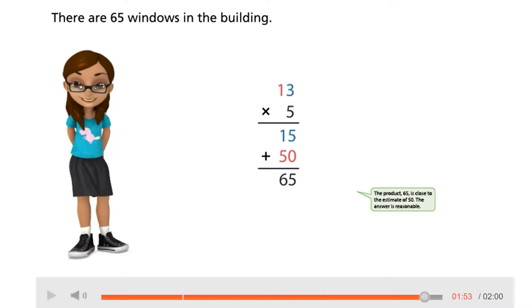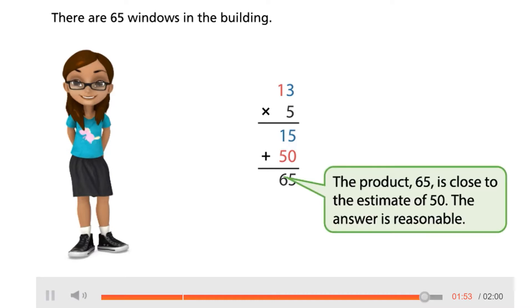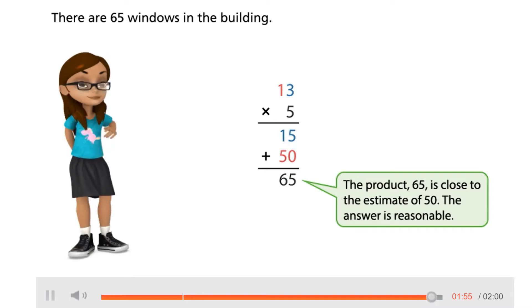I want you to just become familiar with how they got the numbers that they got. When they did 5 times 3 equals 15, they put the entire 15 underneath. When they did 5 times 10, because that one is in the tens group, they got 50. So they put the entire 50 underneath, and then they combined or added those two together to find their product. The product 65 is close to the estimate of 50. The answer is reasonable.